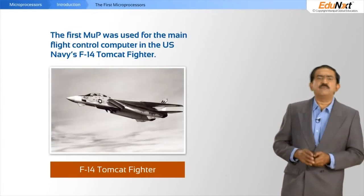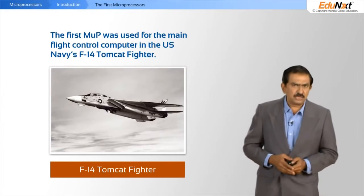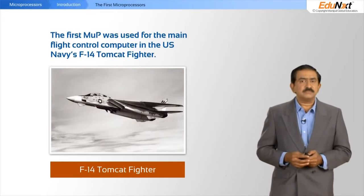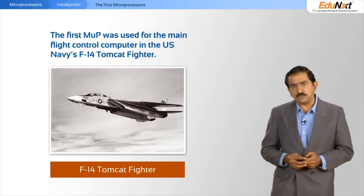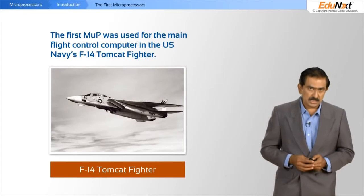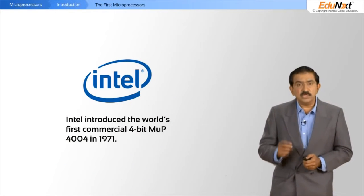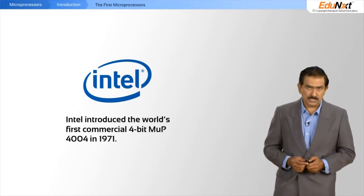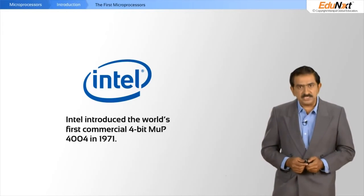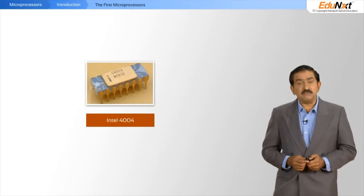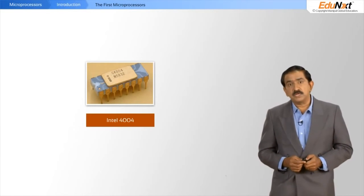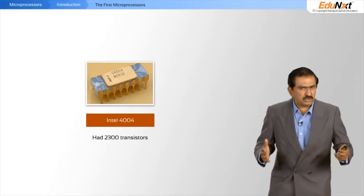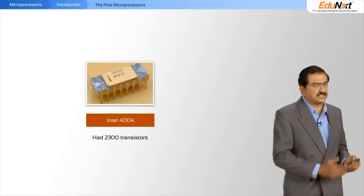Let us look at the history of microprocessors. The first microprocessor was called the Tomcat and was made for the Department of Defense, USA. But the first commercially available microprocessor was the 4004, which came from Intel — a 4-bit processor containing 2300 transistors.